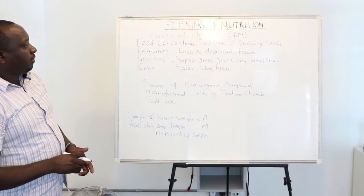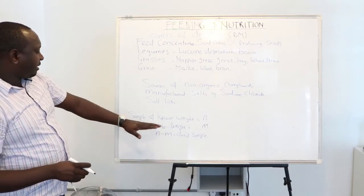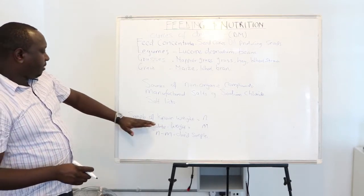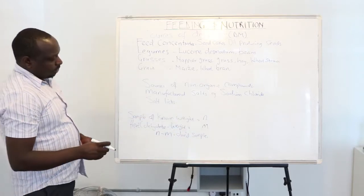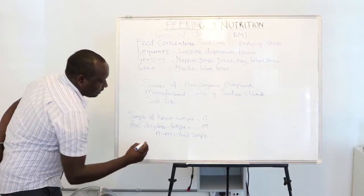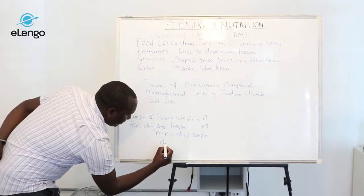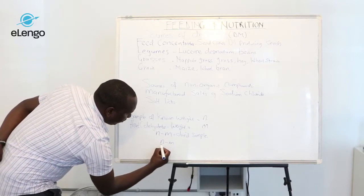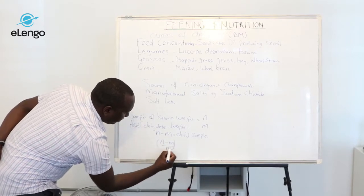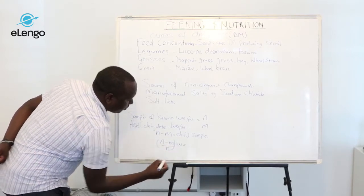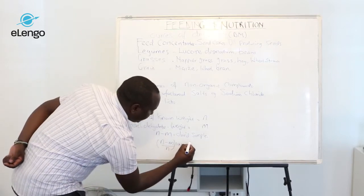To get the percentage of dry matter of the sample, you calculate: N minus M over the initial weight N, multiply by 100, and you get the dry matter percentage.